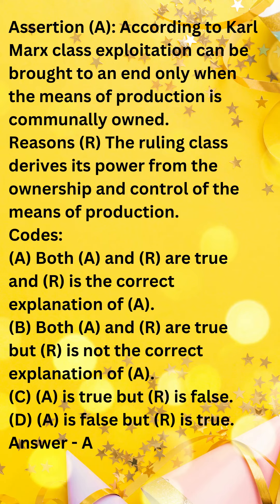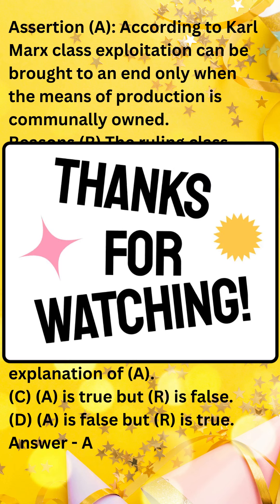Therefore, statement A is true. The given reason R directly supports statement A by highlighting the crucial role of the means of production in the power dynamics of class exploitation. The ruling class's ownership and control of these resources allows them to exploit the labor of the working class. Thus, the correct answer is A — both A and R are true and R is the correct explanation of A.